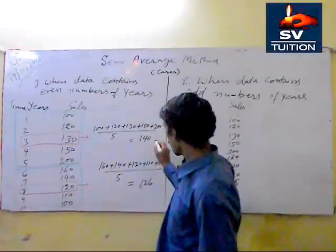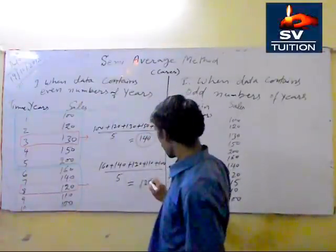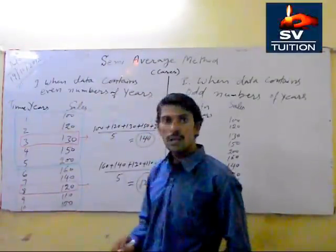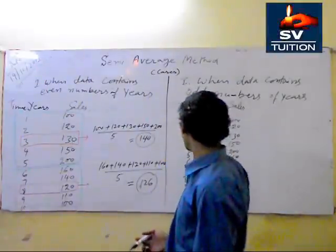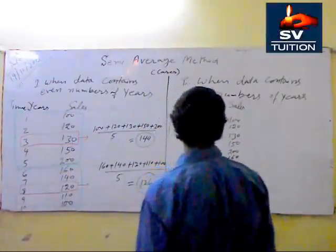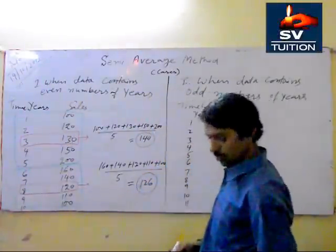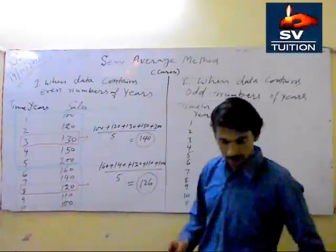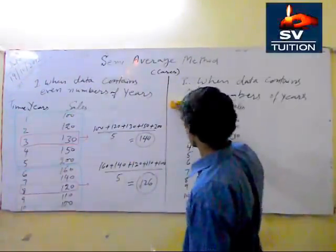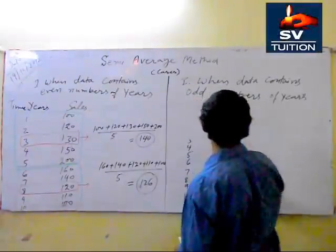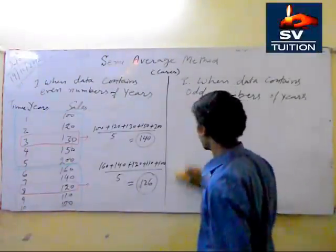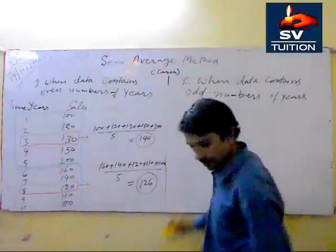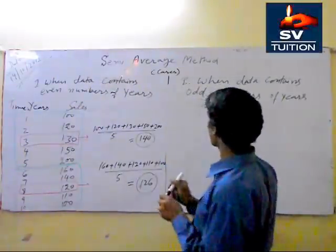We show 140 and 126 in the graph paper. Now we show, just we take this first of all. We take this in the graph paper, and then we will explain the second case.